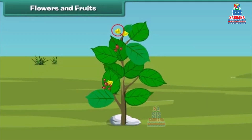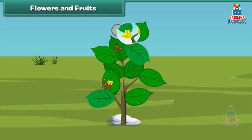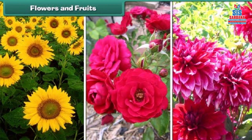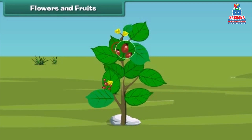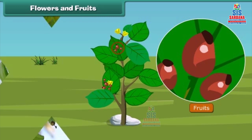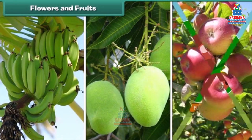Friends, now let us know about the most attractive and most beautiful part of the plant — that is the flower. Flowers are of different colors and types, like sunflower, rose, and dahlia. I know that most of you also like fruits. Fruit is the juicy part of the plant. Fruits come in different shapes, sizes, and colors, like banana, mango, apple, and oranges.